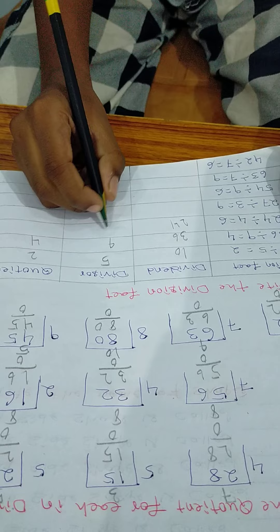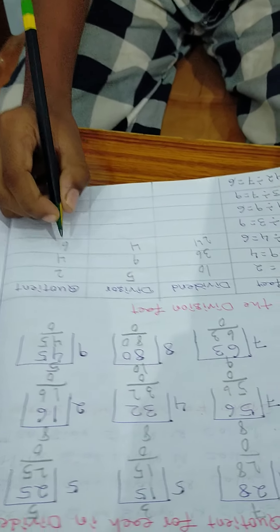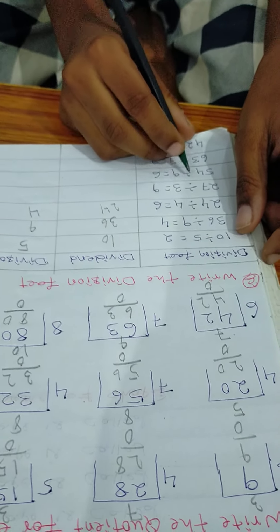24 divided 4 is equal to 6. Dividend is 24. Divisor is 4. Quotient is 6.